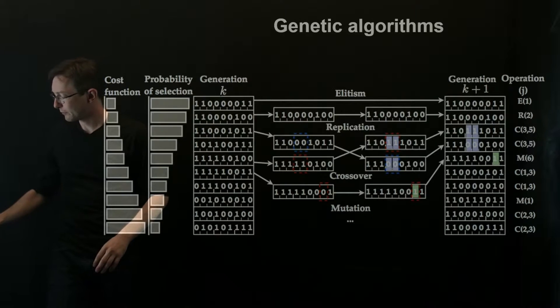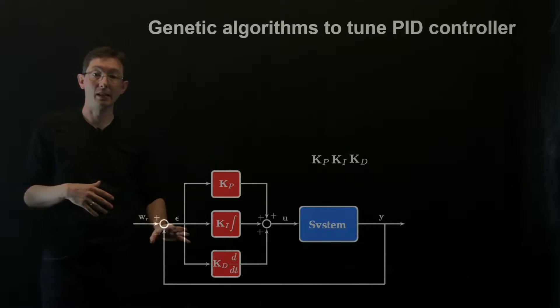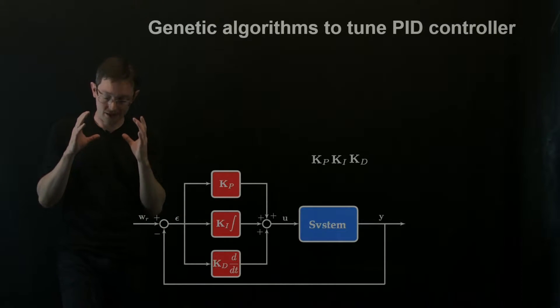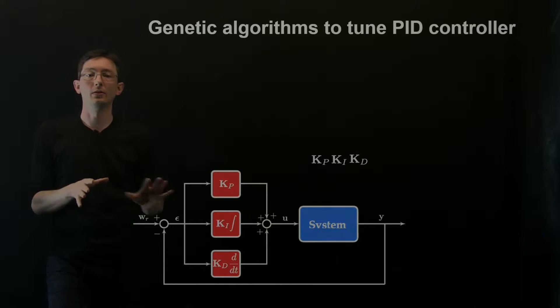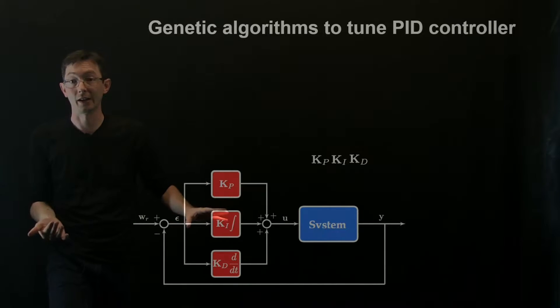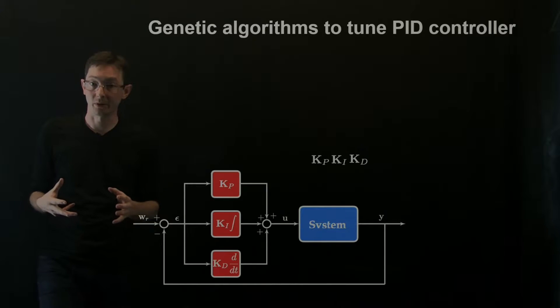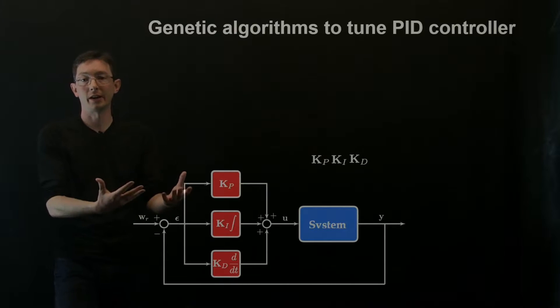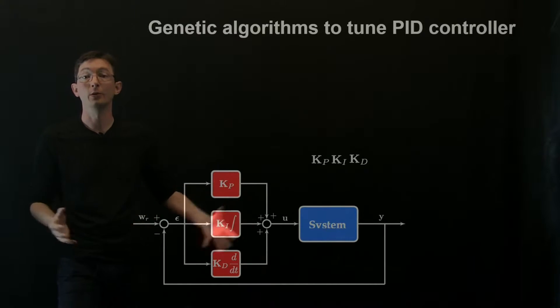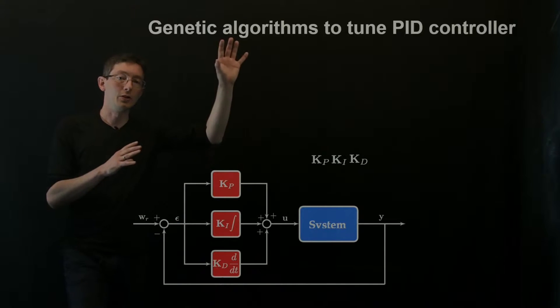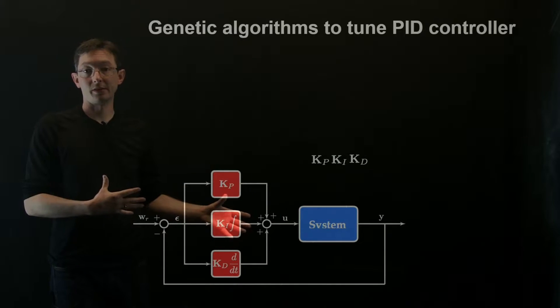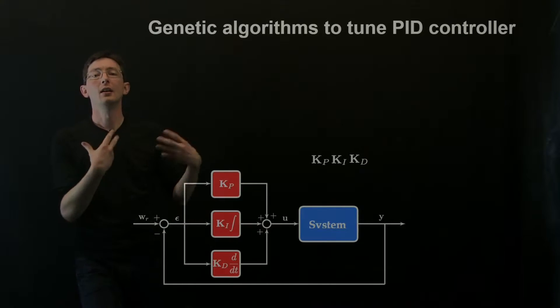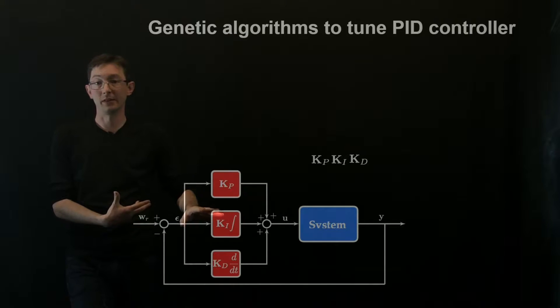Now I'm going to illustrate this on the simple case of using a genetic algorithm to tune a PID controller. I would definitely caution you, you should not be tuning PID controllers with genetic algorithms in most cases. There are far simpler ways to do this. This is an illustration of how you can use a genetic algorithm in a system where we know the answer and we know how it behaves. And then you could generalize that to much more complicated control systems. So this is an analogy. I'm not saying you should tune PID controllers with genetic algorithms, but I'm going to walk through how you use genetic algorithms on this example.